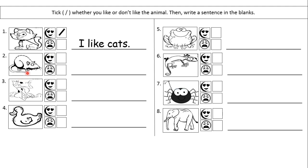After this, I want you to do this worksheet. Look at the animal, and if you like the animal you tick here and write the sentence — for example, I like cats. But if you tick here, you write: I don't like cats. Do you understand, class? Okay, that's all for today. Thank you, class. See you again — bye bye!